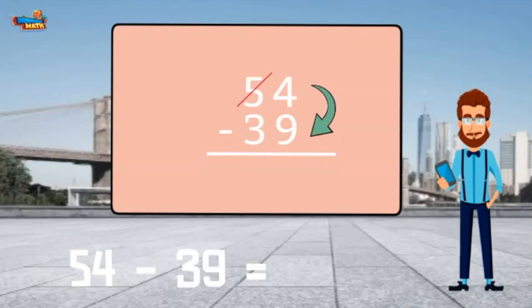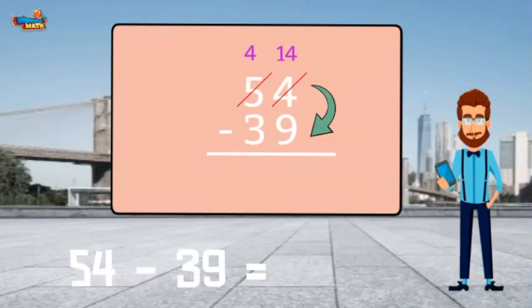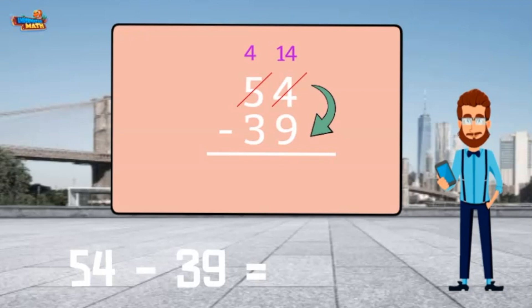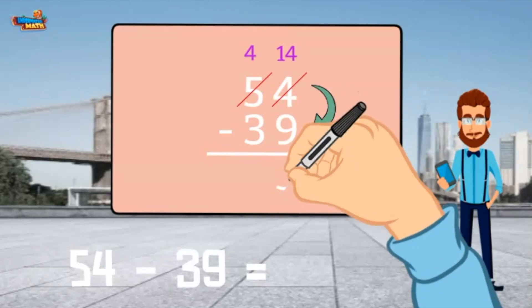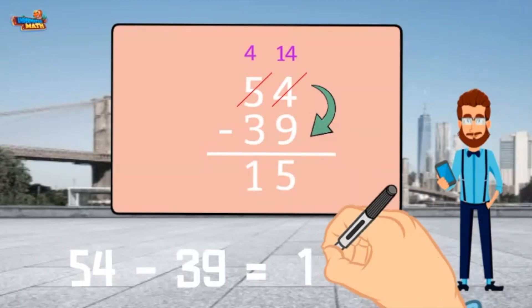Cross out the 5 and make it a 4. Cross out the 4 in the 1's place and make it a 14. We added the group of 10 to the 1's place to get 14. 14 minus 9 equals 5. 4 minus 3 equals 1. 54 minus 39 equals 15.